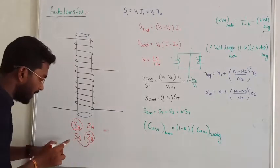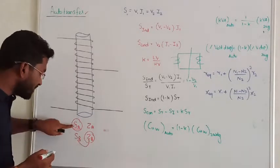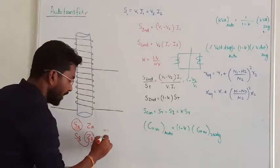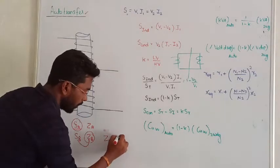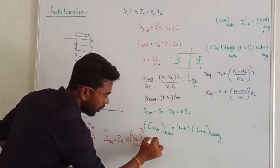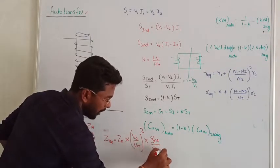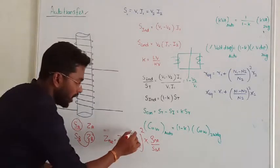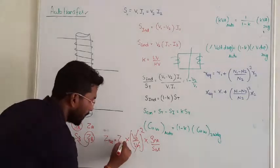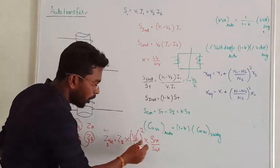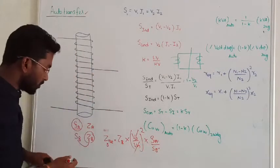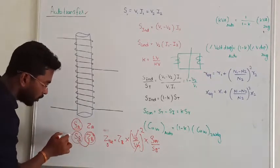ZB is the apparent power corresponding impedance for a given base SA. The new impedance value will be: old impedance multiplied by (old voltage divided by new voltage) squared, multiplied by (new apparent power divided by old apparent power). In parallel operation, voltage remains the same so those terms cancel, giving ZB_new = ZB_old multiplied by (SA_new divided by SB_old).